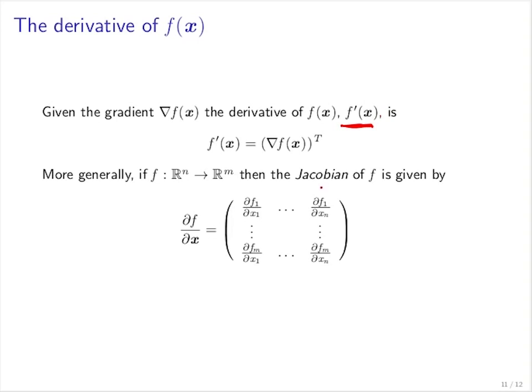And more generally, the derivative of a multivariate function f is often called Jacobian. And if f is such that it maps an n dimensional input to an m dimensional output, then the Jacobian of f with respect to position x is actually an m by n matrix.